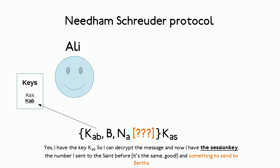Ali can decrypt the message from The Saint and inspects its contents. Part of the message is still encrypted with a key Ali doesn't have, and that part should be sent to Bertha later. The part Ali can read contains the nonce he sent before. Ali checks if it really is the same number, and as he knows when he sent it, Ali can be reasonably sure this is a fresh response from The Saint, not a replay of a previously intercepted message. The part Ali can read also contains the session key The Saint generated, so now Ali has the session key. But Bertha still hasn't.